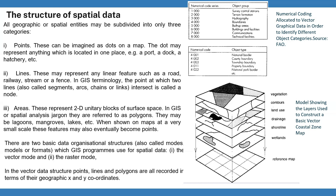Lines may represent any linear feature such as a road, a railway, stream, or fence. We can add pipelines and water conveyance structures. At most mapping scales these features will retain their linear form, though the degree of detail and generalization will vary with scale. In GIS terminology, the point at which two lines — also called segments, arcs, chains, or links — intersect is called a node.